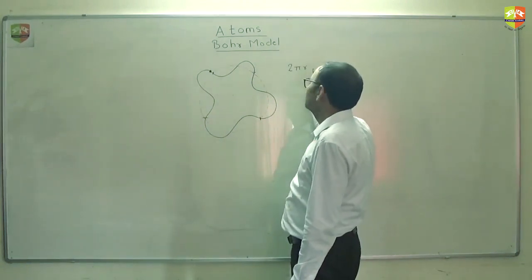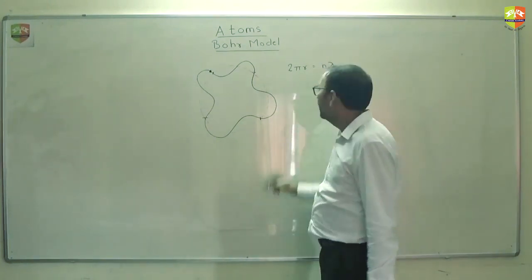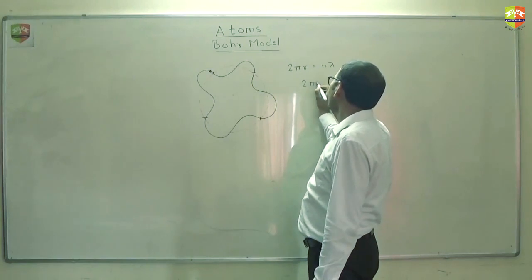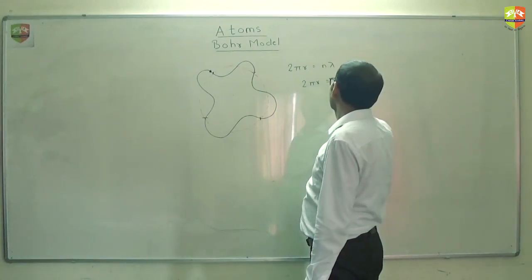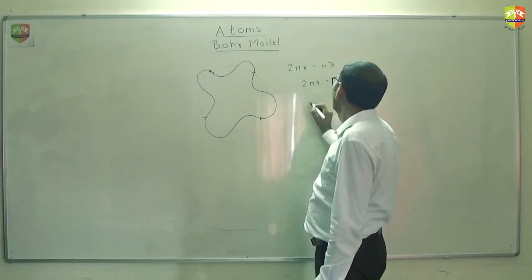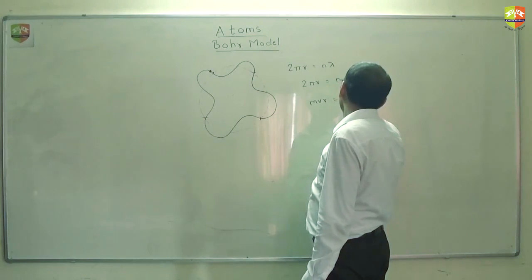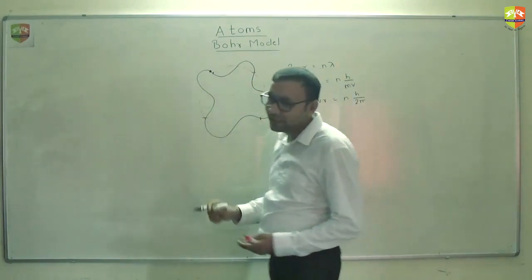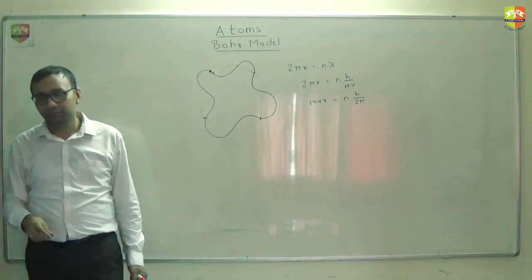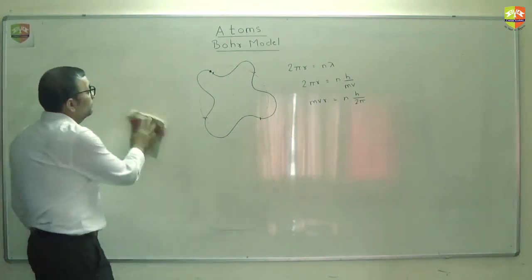So total path is 2 pi r. This should be equal to n into lambda. And what is lambda according to de Broglie? h by p which is linear momentum. So it becomes mv. So you can get mvr is equal to nh by 2 pi. So what de Broglie has done that coincides with the Bohr model.